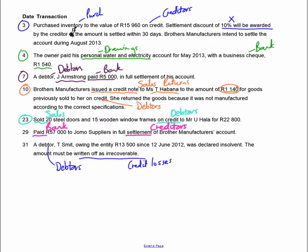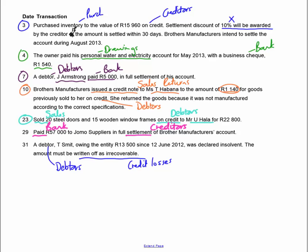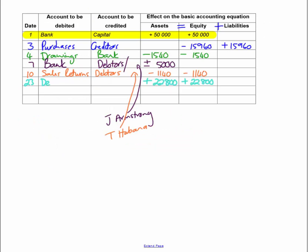Transaction on the 23rd: we sold doors and windows on credit to Uholla for R22,800. Sales is an income falling under owner's equity — more income means more profits for the owner. Selling on credit means debtors is an asset. More debtors means assets are increasing. DEAD: debit the debtors (assets increasing). CLICK: credit my sales (income increasing).